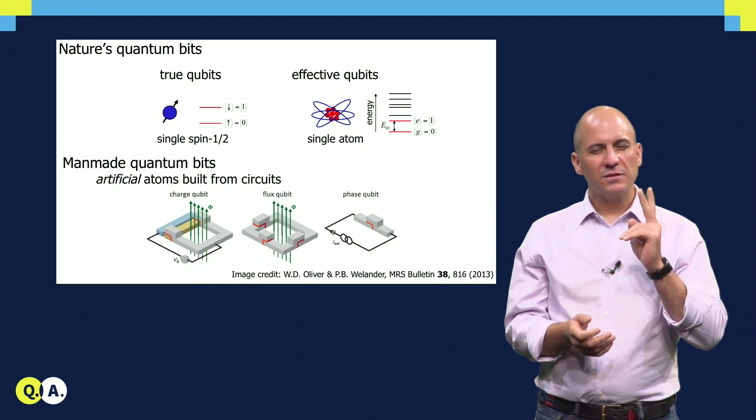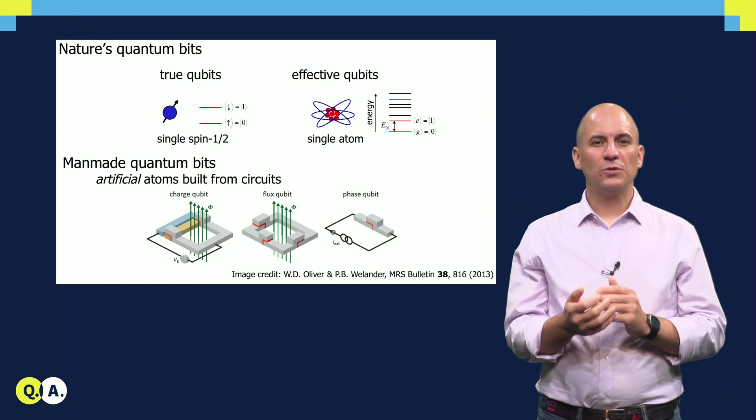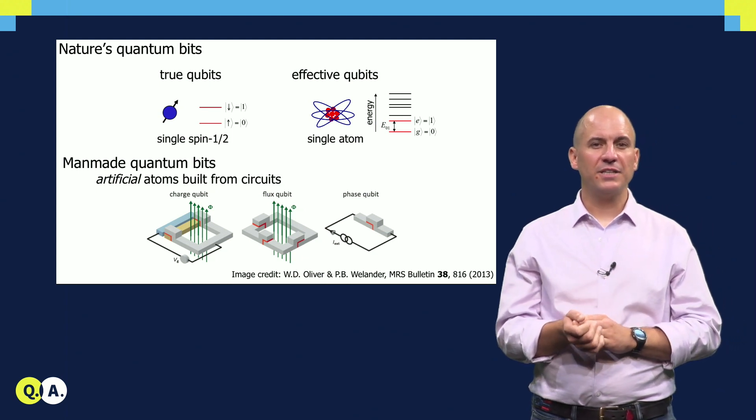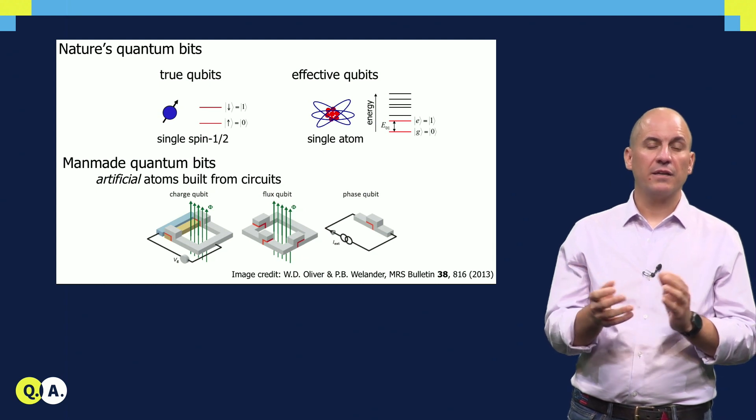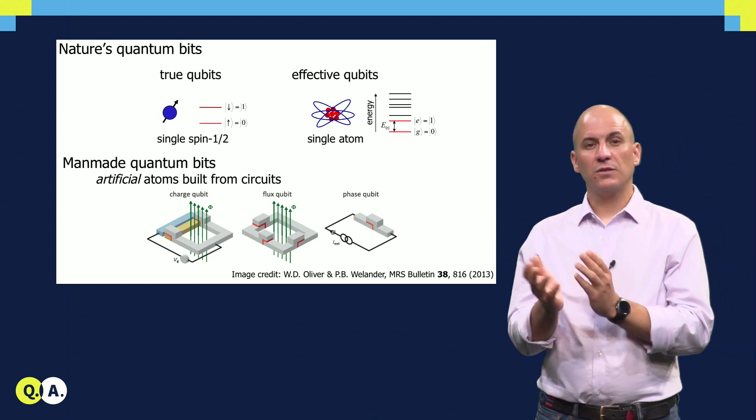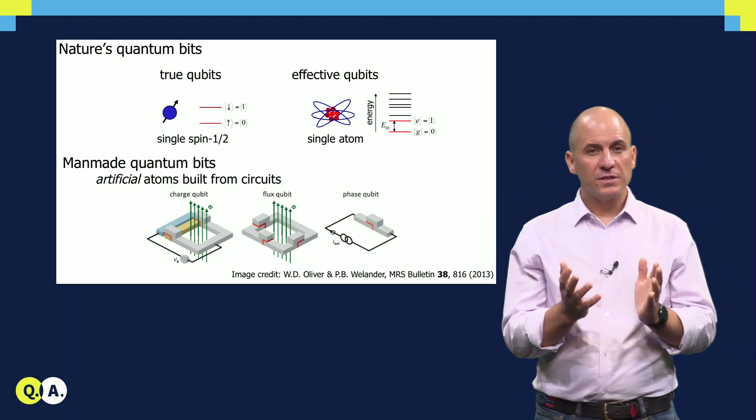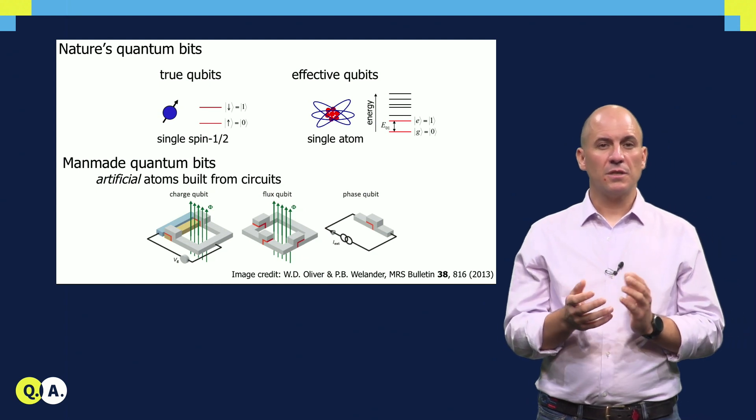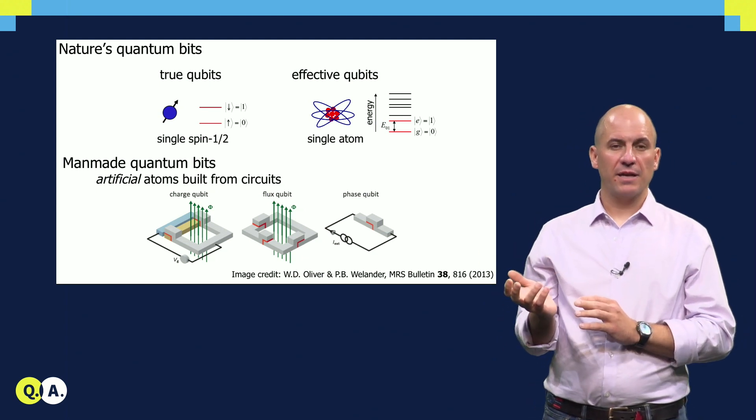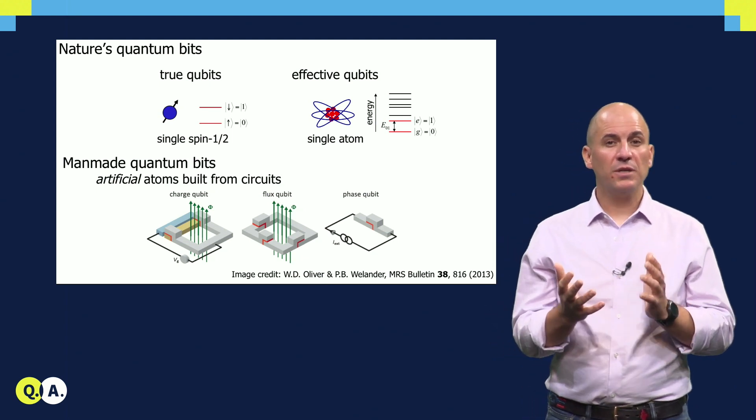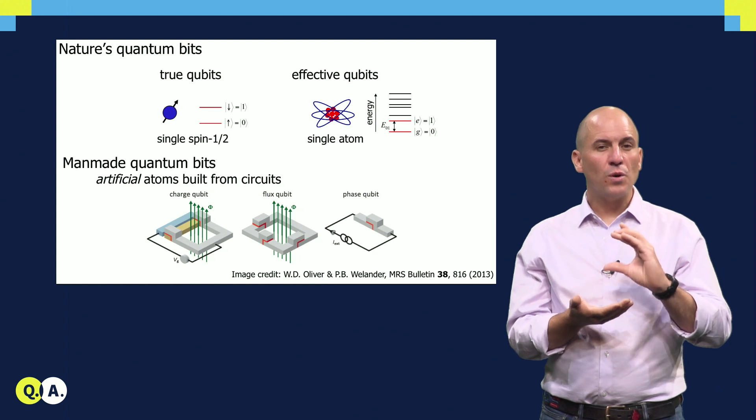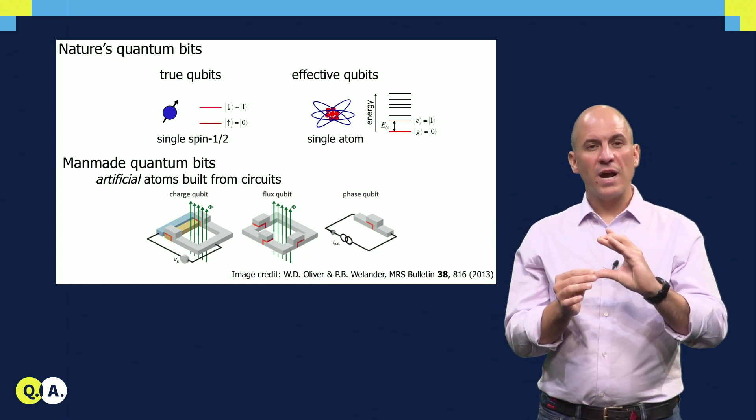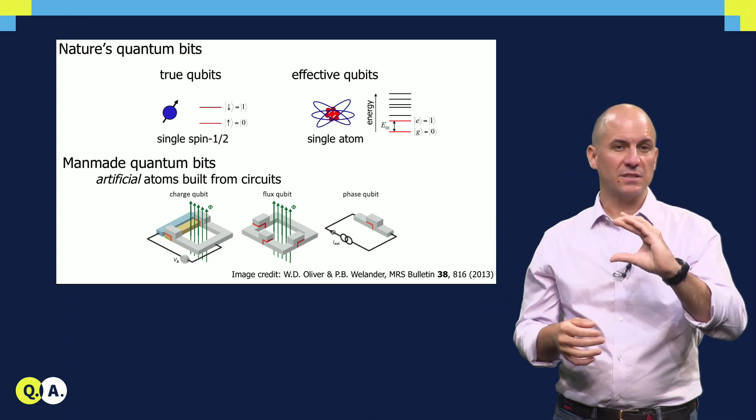Superconducting qubits differ in two important ways from truly quantum two-level systems provided to us by nature, such as the spin of an electron or the spin of certain nuclei, like carbon-13 or silicon-29. First, they are multi-level systems, not unlike the electronic levels in atoms. Multi-level quantum systems can be used effectively as qubits by confining all dynamics to two quantum levels, usually the ground and the first excited state of the system.